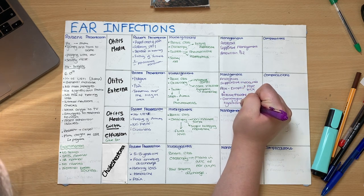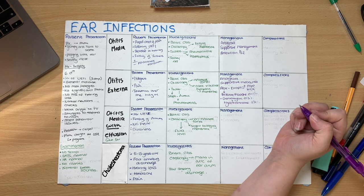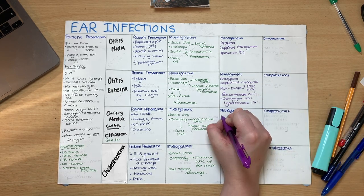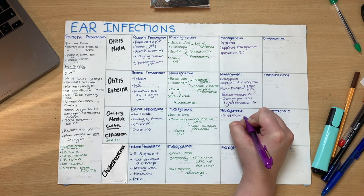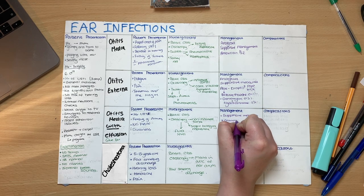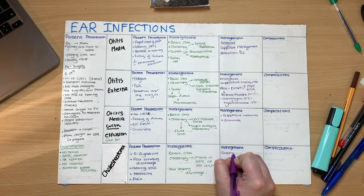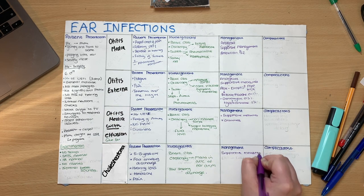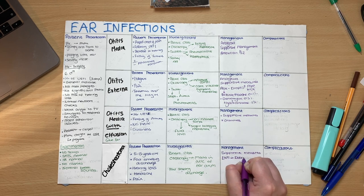For otitis media with effusion, supportive measures are generally the best way to treat patients. However, in those with chronic cases and in children, you can refer to ENT for insertion of grommets, which are small tubes that enable the middle ear to drain. Cholesteatomas generally require surgical removal, so these are referred to the ENT department of the local hospital for treatment.